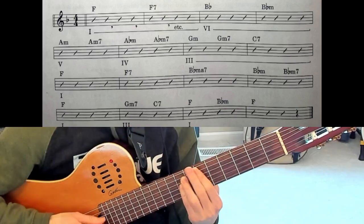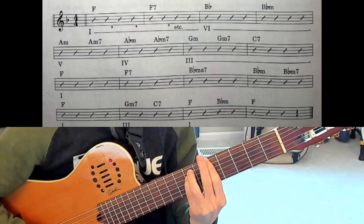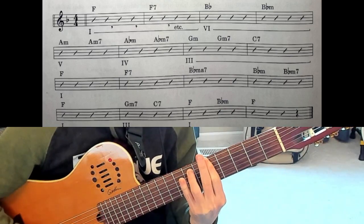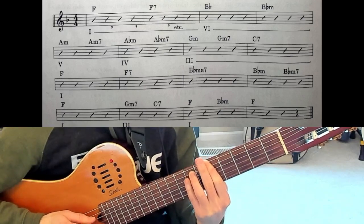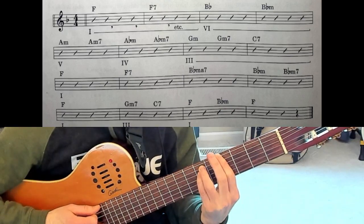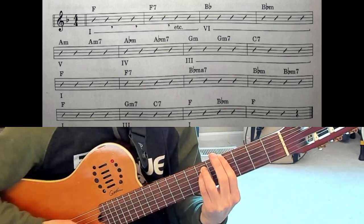And now A minor at the fifth fret. A minor seven just take off the pinky. A flat minor at the fourth fret, take off the pinky.